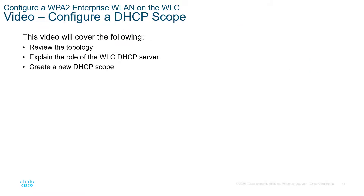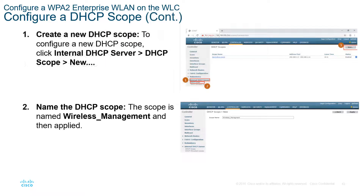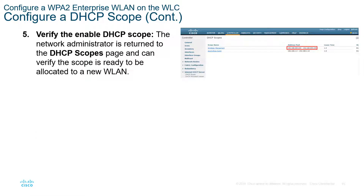There's a video walking through the scope, but we're doing this as a lab step by step. To create the DHCP scope: go to Controller, Internal DHCP Server, set DHCP scope, name it, and verify. Click on the scope name and enter all appropriate scope information — pool address, lease time, default router, domain name, DNS — and importantly, make sure the status is set to Enabled. Lastly, verify the address pool and lease time are appropriately configured.